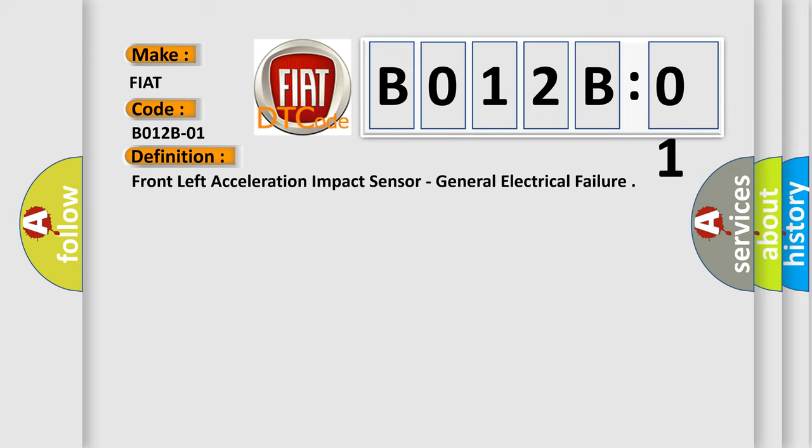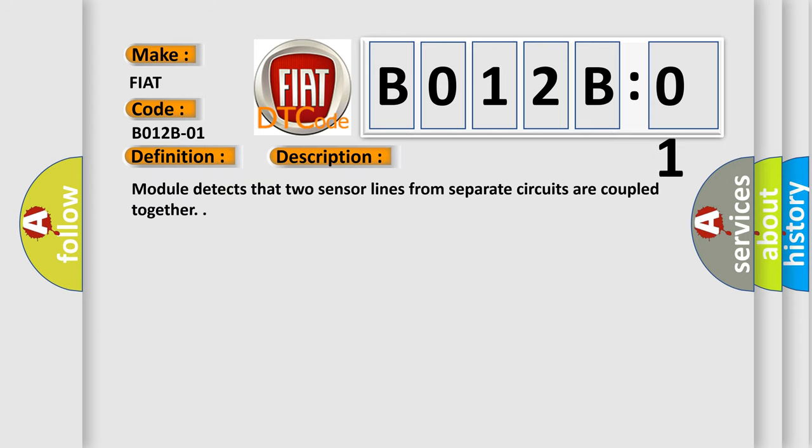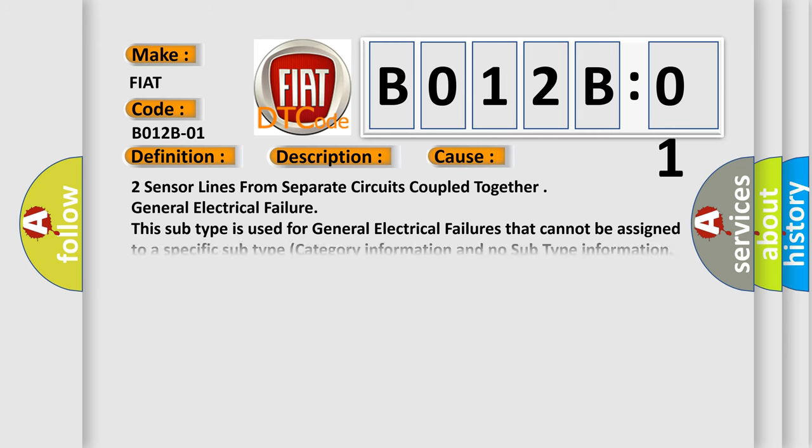And now this is a short description of this DTC code. Module detects that two sensor lines from separate circuits are coupled together, general electrical failure. This diagnostic error occurs most often in these cases: two sensor lines from separate circuits coupled together, general electrical failure. This subtype is used for general electrical failures that cannot be assigned to a specific subtype category information.